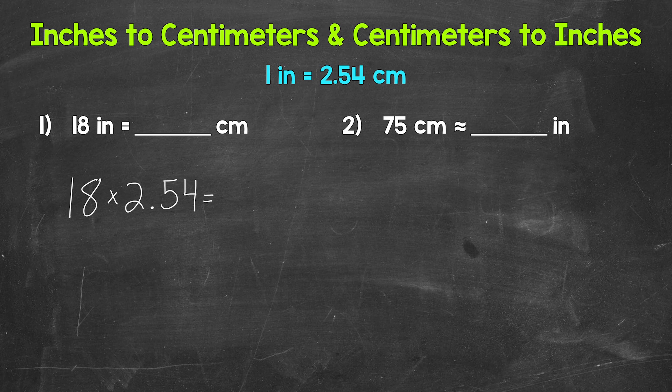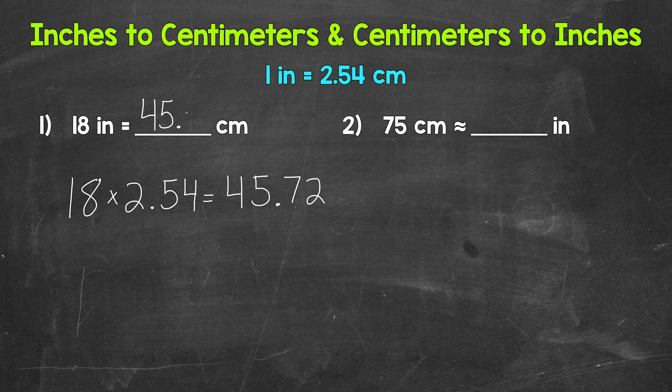Now 18 times 2.54 gives us 45.72. So 18 inches equals 45.72 centimeters. So when going from inches to centimeters, multiply by 2.54.